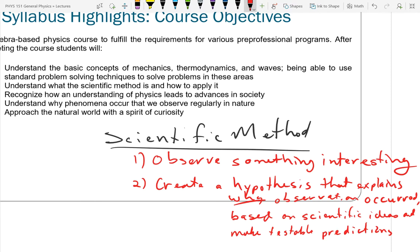A hypothesis must also make testable predictions. In Apocalypto, their testable prediction was: if we kill enough people, we'll make the gods happy and the eclipse will end. Seemed to work — but if you hadn't cut off heads, we know it would have still ended. Step two is creating a hypothesis that explains why the observation occurred and is based on scientific ideas. Astrology is not a science because there's no known connection between your life and the position of the sun relative to the stars.